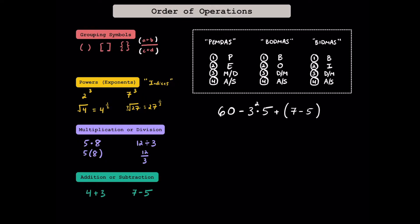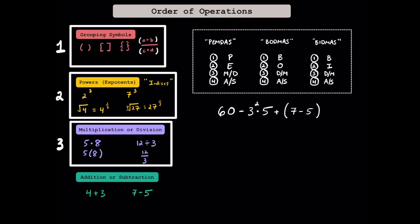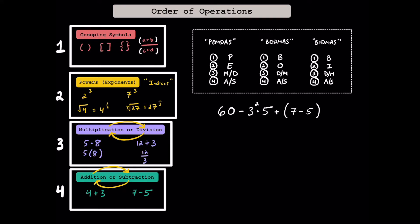So everyone's following the same rules of the game and the same order of operations. Grouping symbols always get priority. Then powers come next. Multiplication and division are equally important — whichever one you see first, from left to right. And addition and subtraction always comes last, whichever one you see first, from left to right. Whenever you see multiplication or division in a problem, make sure you just do whichever one is to the left first. Don't fall into the trap of thinking that multiplication always comes first — that's just not true.